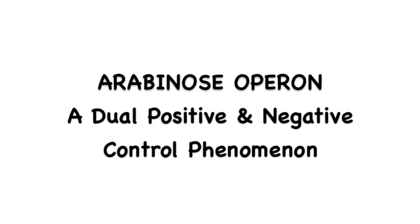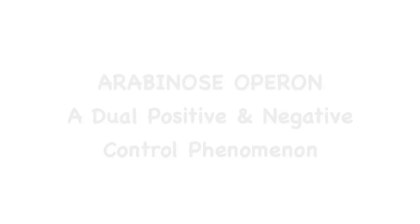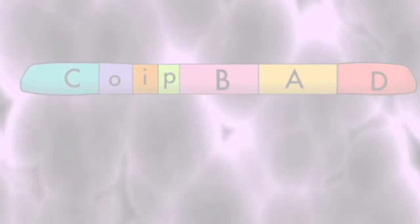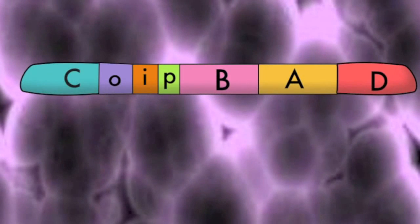The arabinose operon — a dual positive and negative control phenomenon. E. coli can use the sugar arabinose for energy. It has an operon dedicated to making what it needs to break down the sugar. This operon, just like the lac operon, can be under either positive or negative control.